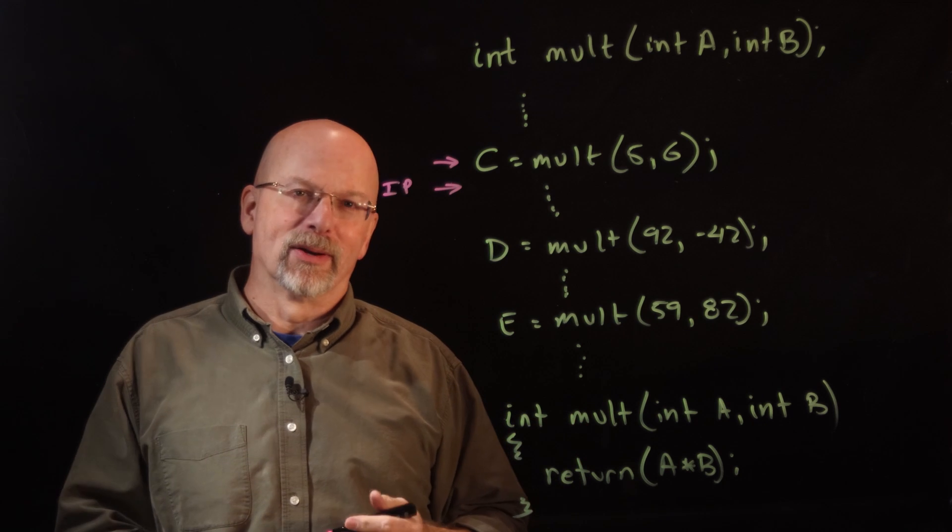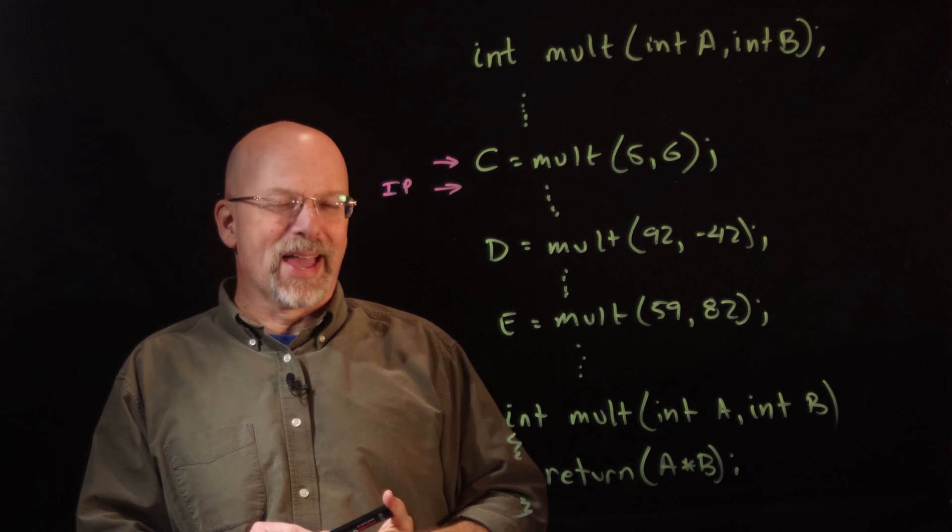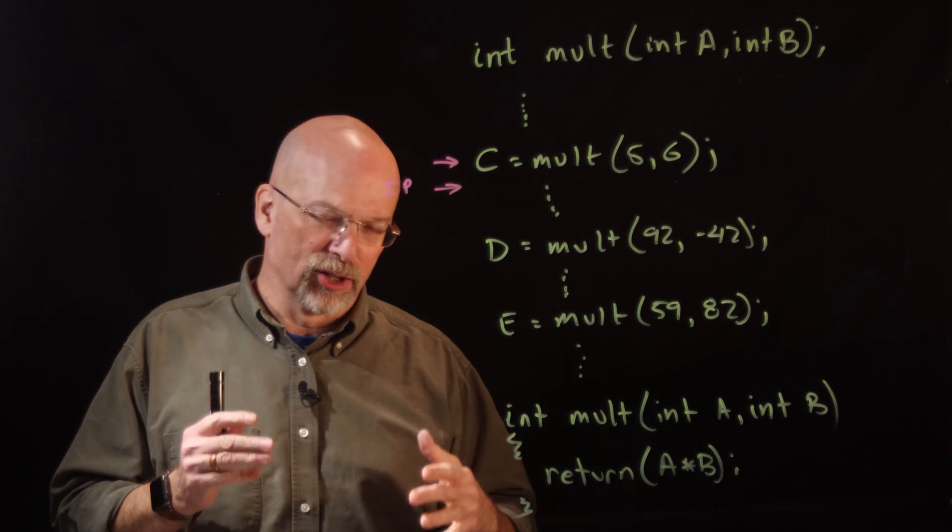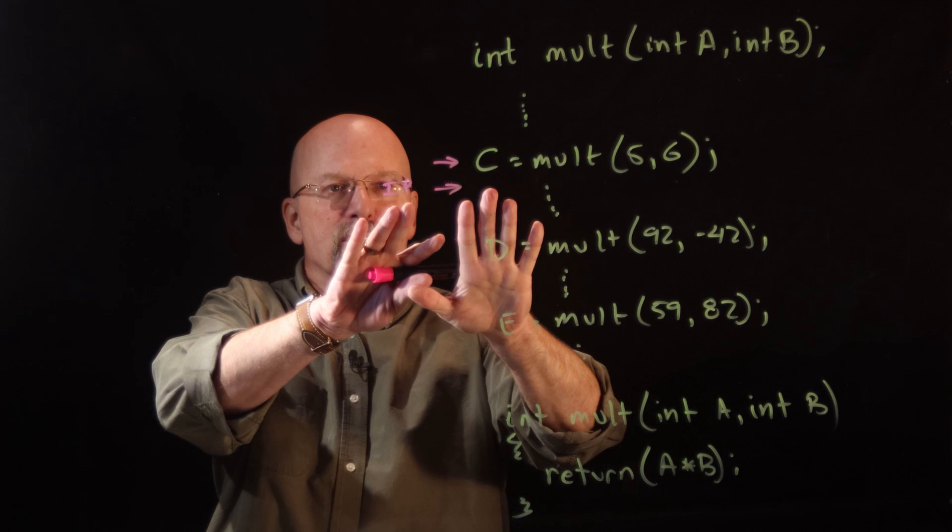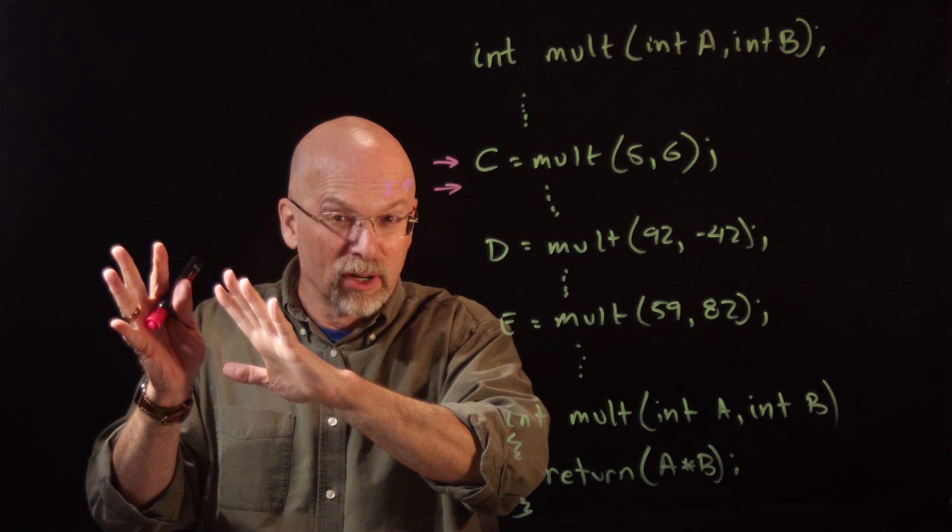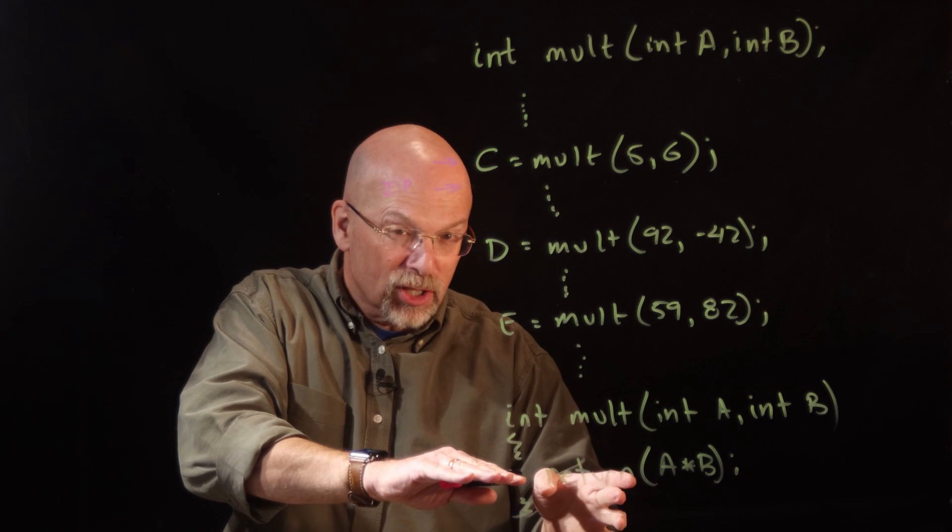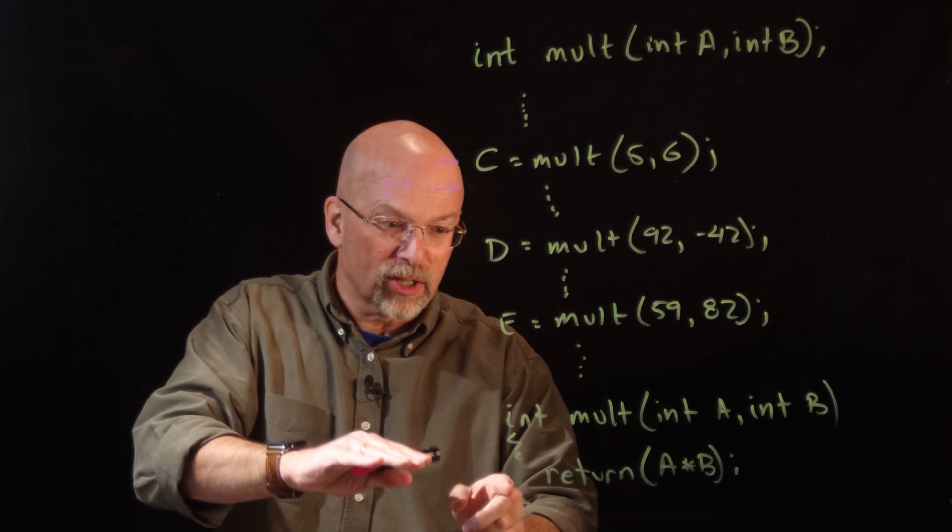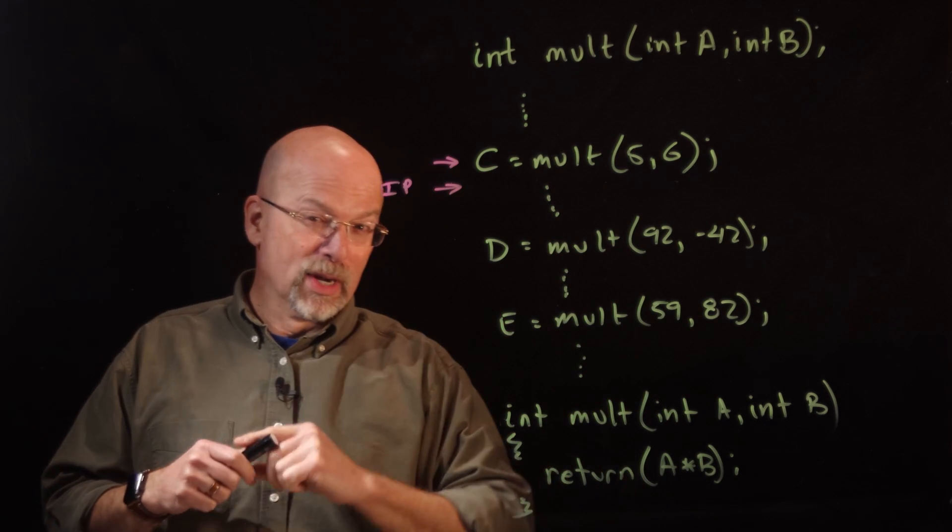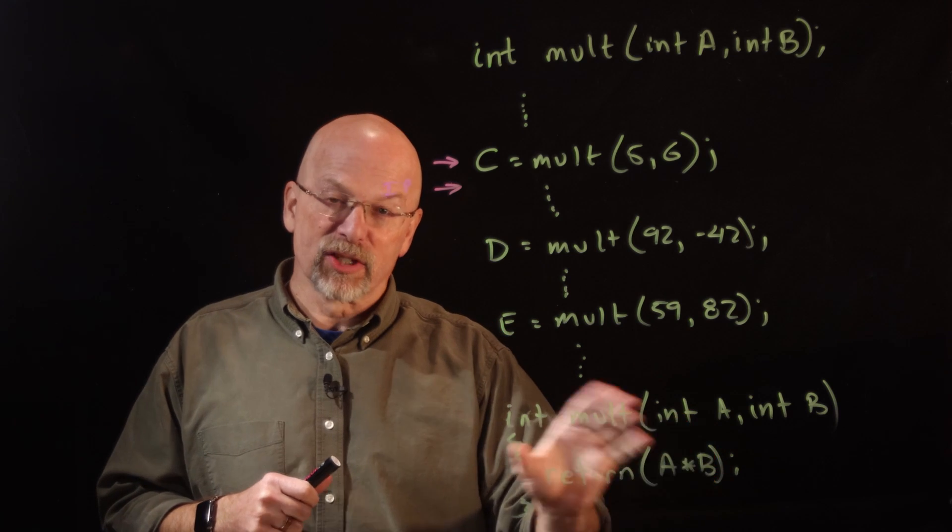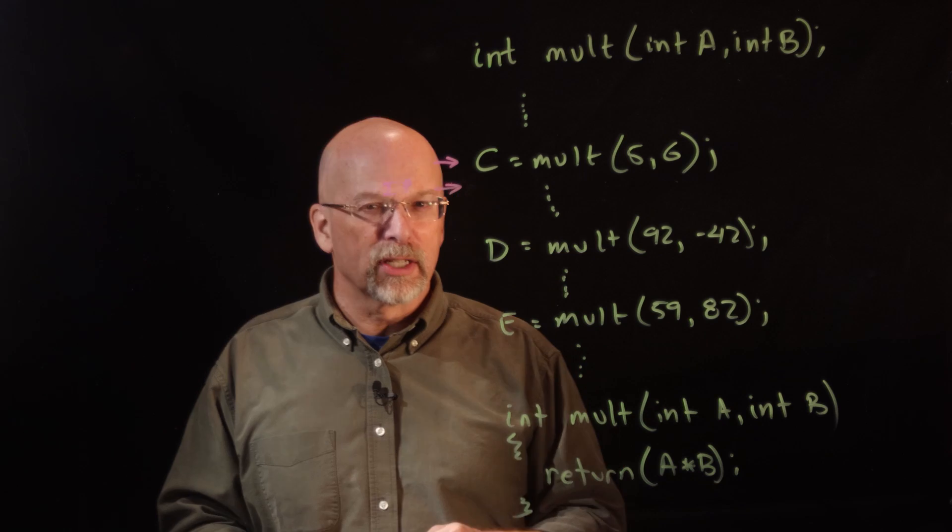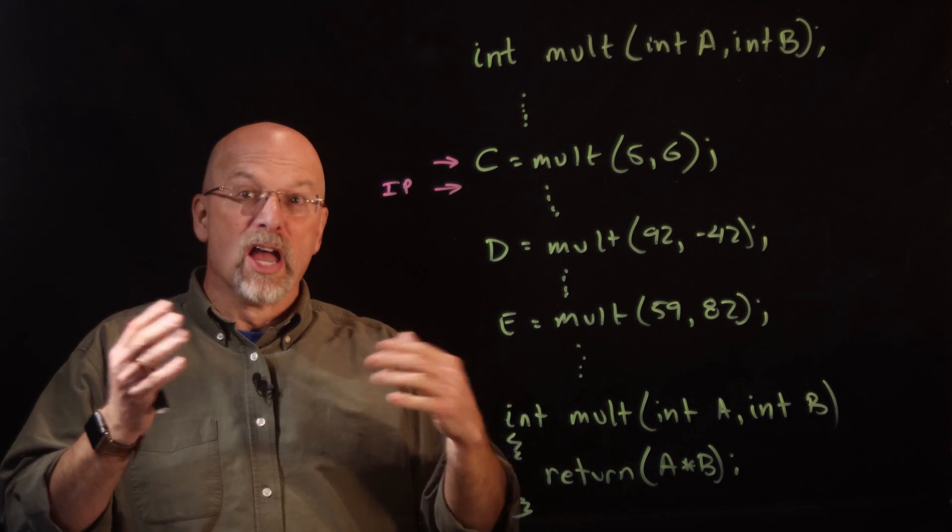What would be a good place to store that? Well, some processors have something that's called a link register. A link register says I'm going to simply put that return address into this new address register, and then at the end of this function I'm just going to take the link register value, put it into the instruction pointer, and the next instruction is going to come back there. Problem is there's only one link register. What if inside of this function I call another function, and maybe inside of that function I call another function? So it's really good to have a foolproof way to keep storing all of these return addresses.